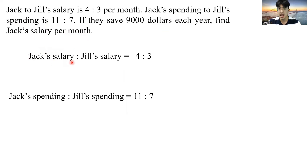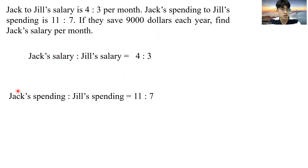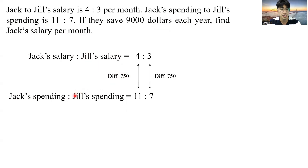We know that if I take Jack's salary minus Jack's spending, there will just be Jack's saving. And if they save $9,000 each year, that will correspond to $750 every month. So the difference between Jack's salary and Jack's spending is $750, as well as the difference between Joe's salary and Joe's spending is $750.